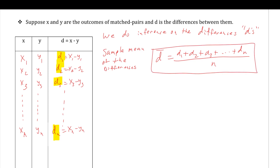We actually have n from the x list and n from the y list, so you might say, isn't there two times n? For example, if we had 10 values from the x list and 10 values from the y list, you would have 20. But we're analyzing just the differences, so there are still only 10 differences in that case. This n value represents the number of pairs — you might have 20 data values, but when you take the difference between those dependent values from each sample, you get only 10 values.